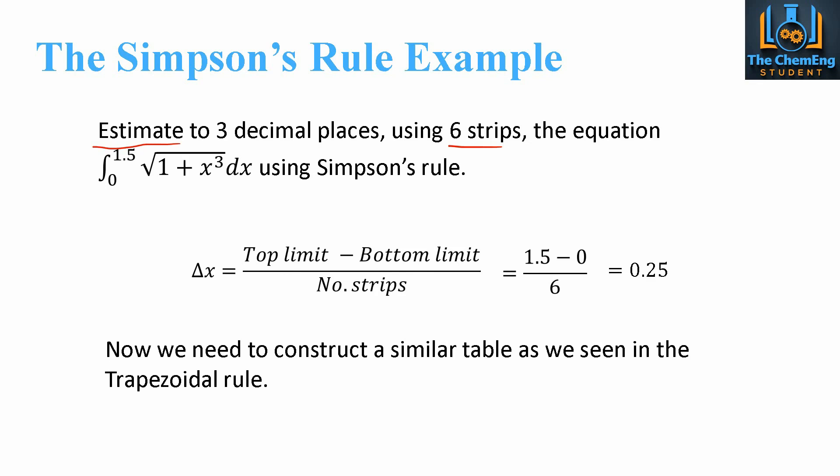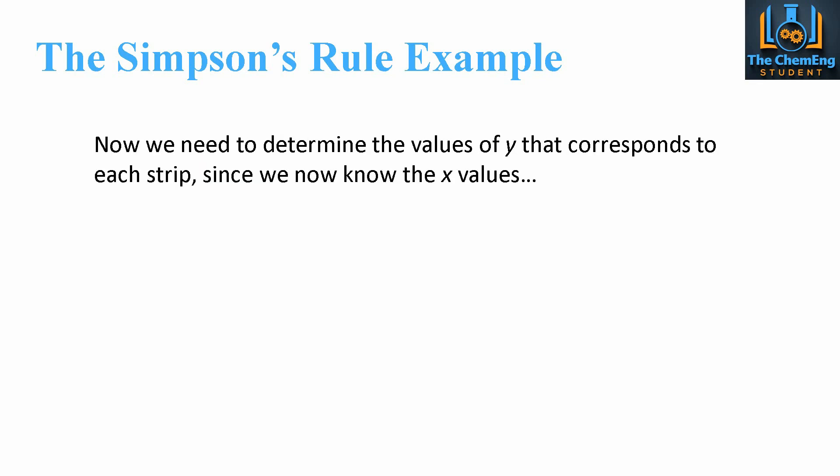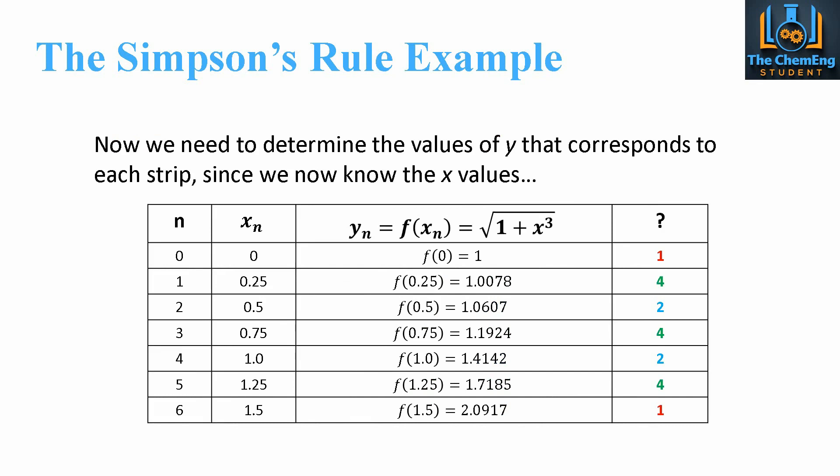Now, we're going to construct a similar table to the trapezoidal rule with the exception of essentially one column. Now, we still need to determine the corresponding value of y. Since we know the values of x. So, our table would look something like this. Now, again, we had six strips. So, we expect to have seven arbitrary values of n. Now, our xn values start from zero. And we know the thickness is 0.25. So, we just add 0.25 every time until we reach our limit of 1.5. Now, we just substitute in these values into the equation. So, we sub into this equation. And we get all these numbers here.